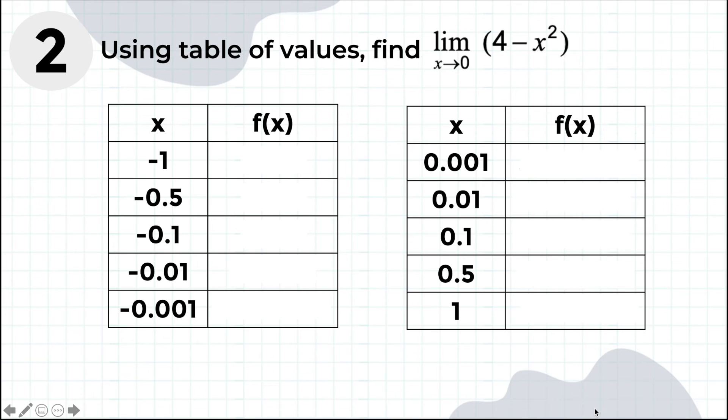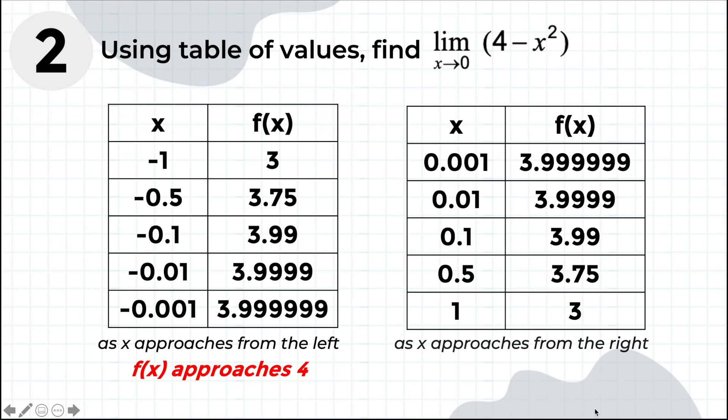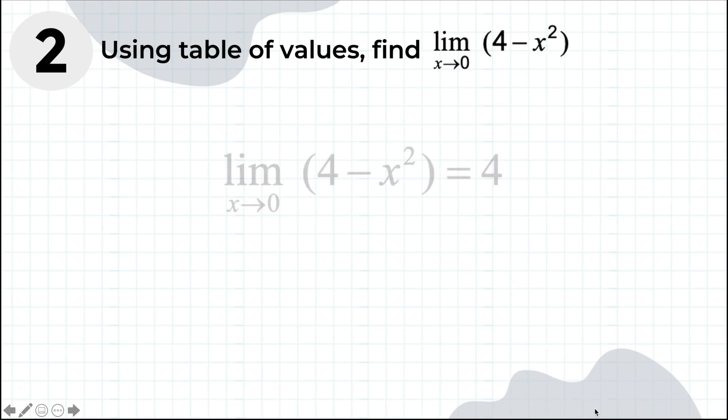Moving on, evaluate the function of these numbers using a calculator. Then observe the outputs. Does the output values approach a certain number? And is the number the same for both sides? If yes, then the limit exists. In this example, the limit is 4.